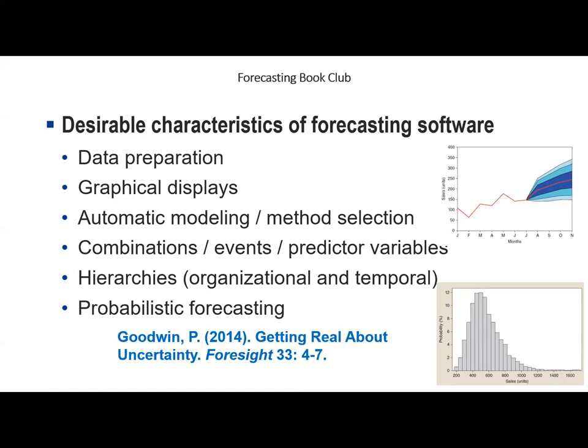For example, if the forecast is 100 plus or minus 10, you could carry less safety stock compared to a forecast of 100 plus or minus 100. Uncertainty can be expressed in a number of ways — prediction intervals, fan charts, and full predictive densities. Paul has a nice article in Foresight discussing these alternatives. Just remember that common methods of computing prediction intervals underestimate the uncertainty, often dramatically, so if the software gives you a 95% PI, probably more than 5% of future observations will fall outside it.